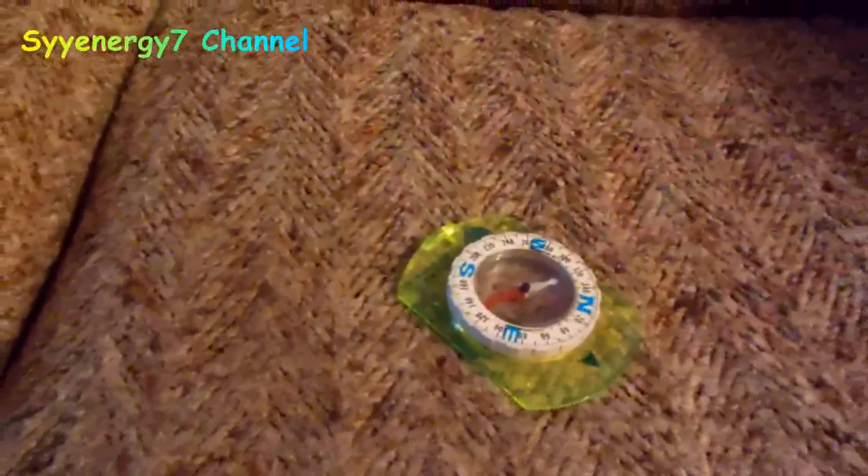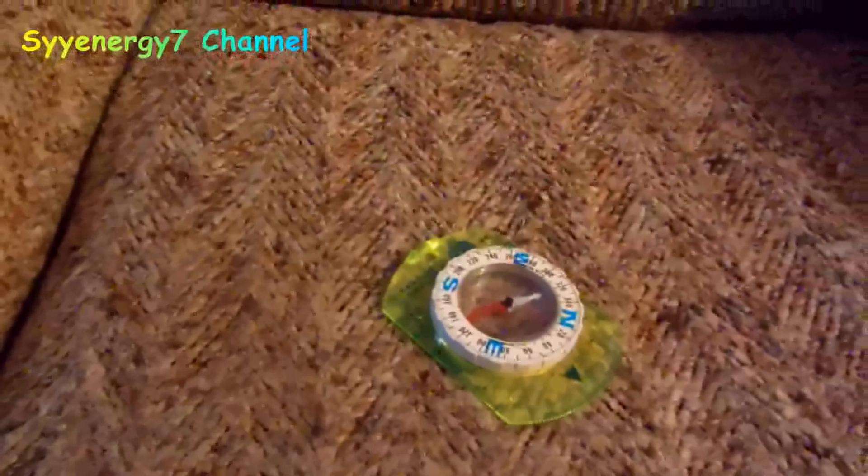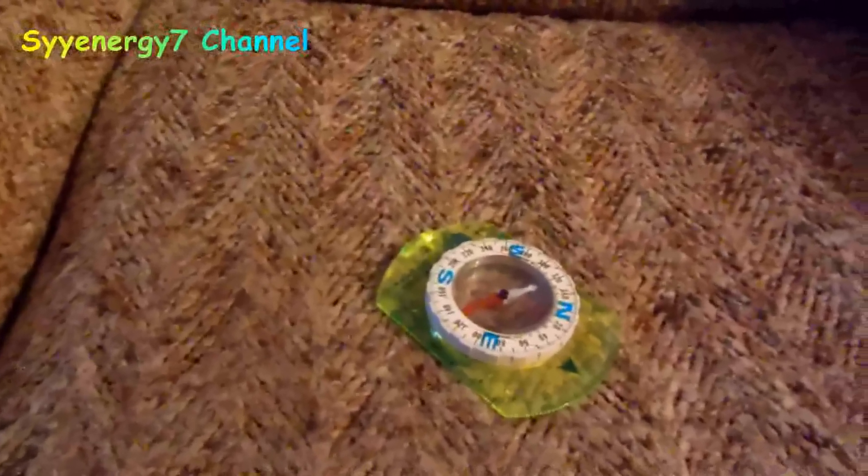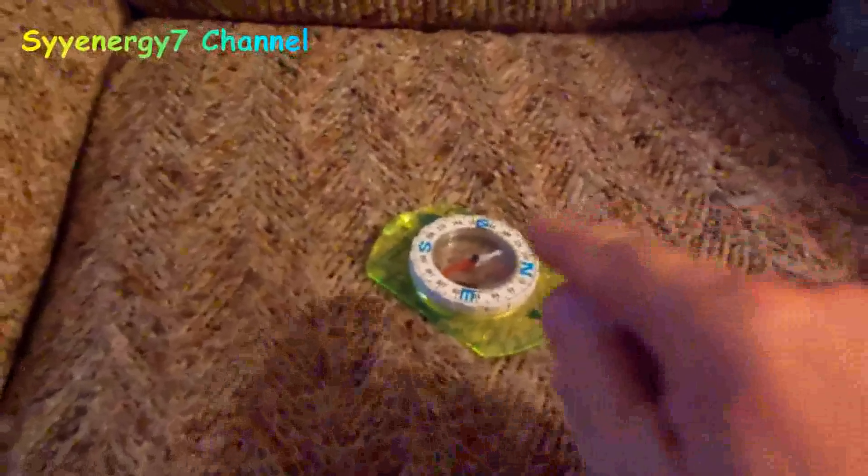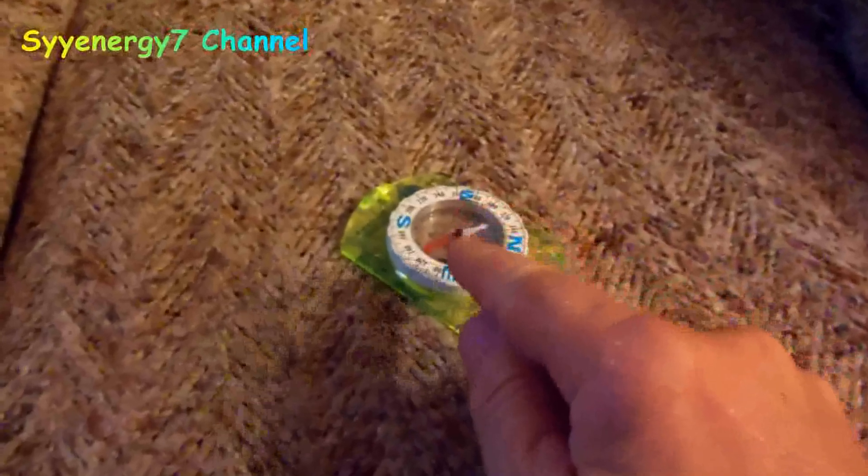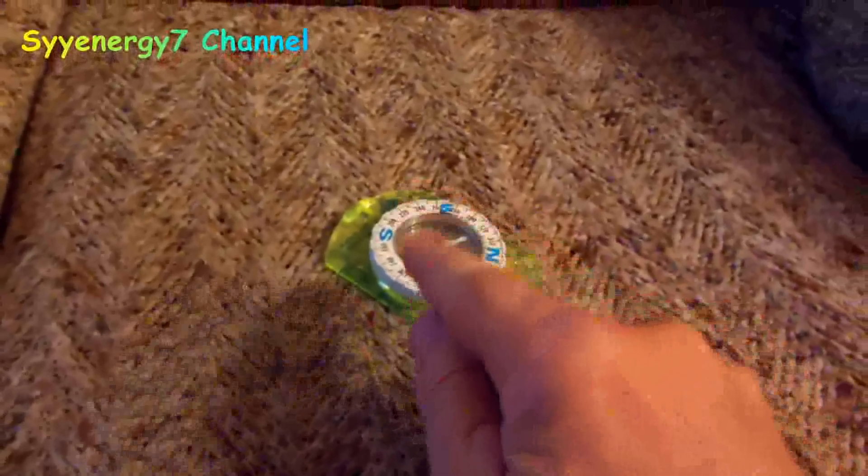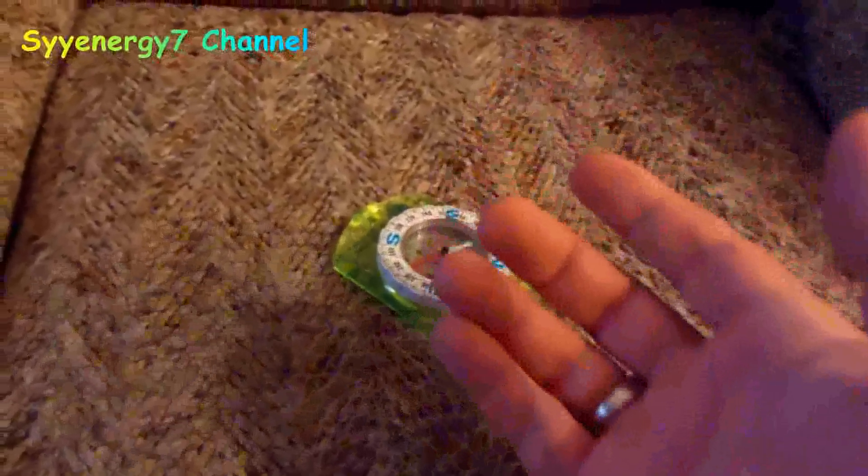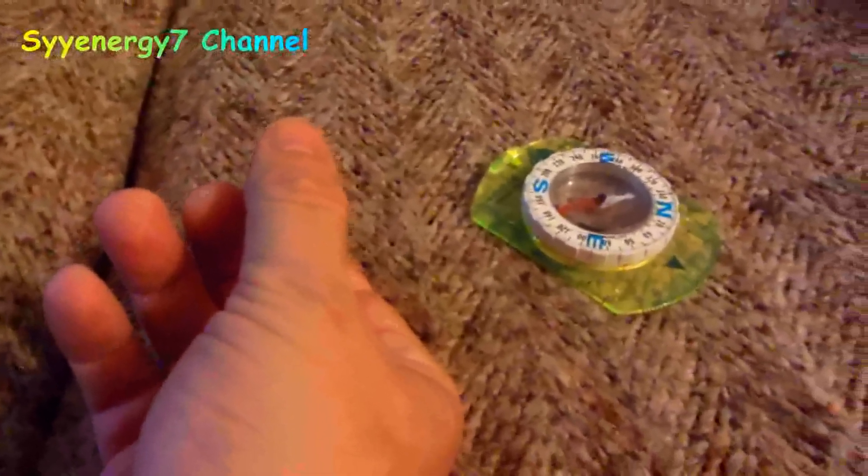It attracts, it seeks the north. The rules still apply. In other words, opposite polarities will attract and same polarities will repel. But the actual needle on the magnet itself is magnetized in its southern polarity so it attracts north. So if you're looking for the magnetic north on a magnet, it would seek the magnetic north just like it would seek the magnetic north on the earth.